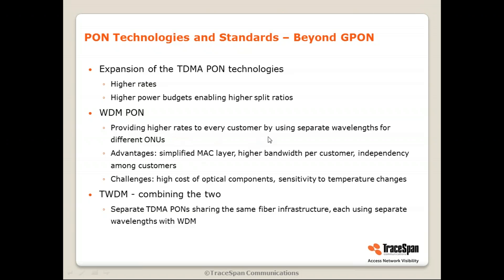With WDM-PON, you can provide higher rates to every customer because that customer has a separate wavelength. The advantages are a simplified MAC layer, higher bandwidth per customer, and independency among customers because each one has their own wavelength — you don't need to split resources among the different ONUs. The main challenges are the high cost of optical components, as they need to support very discrete and accurate wavelengths, and they're also sensitive to temperature changes because temperature drifts may cause channels to collide with other elements on the PON.